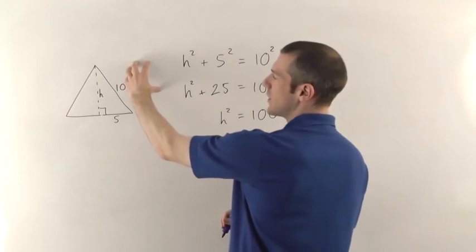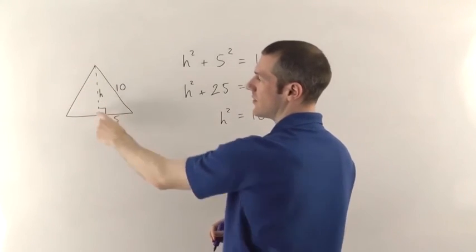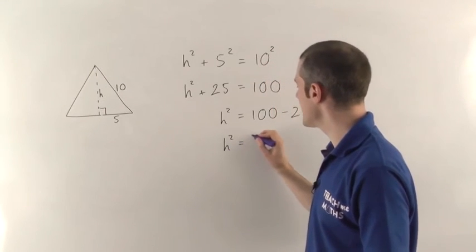So the h squared then is going to be the 100 minus the 25. Yeah, the area of the bigger square minus the area of one of these will give us the area of the square that would sit on the side where the height is.